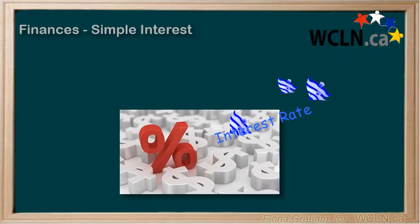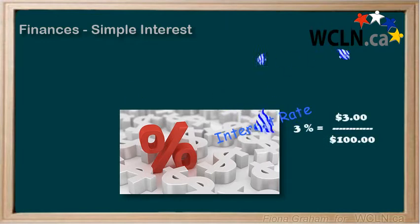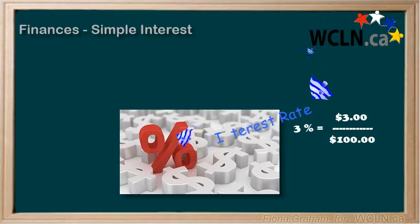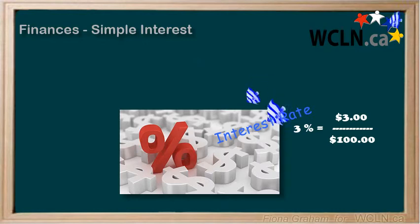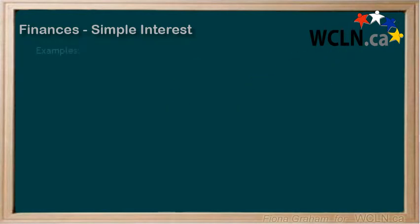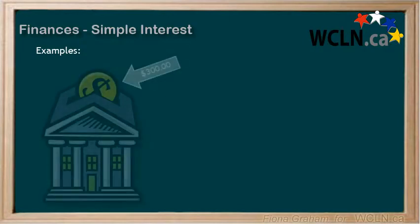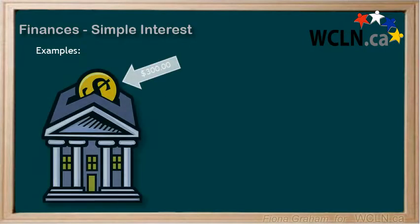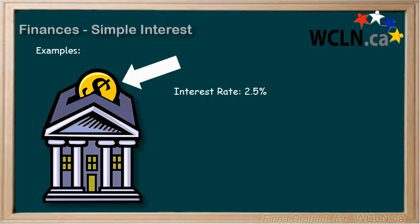For example, the rate could be 3% per year, which means $3 for every $100. Let's try an example. Let's say you put $300 in the bank and the bank pays 2.5% simple interest annually, which means every year.